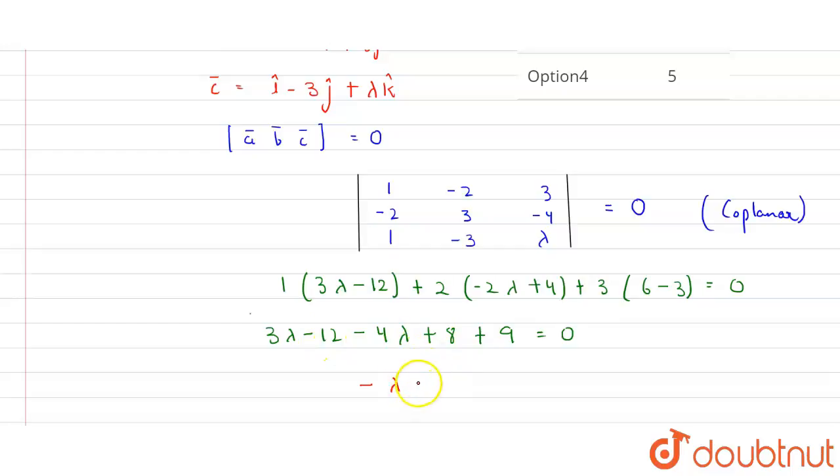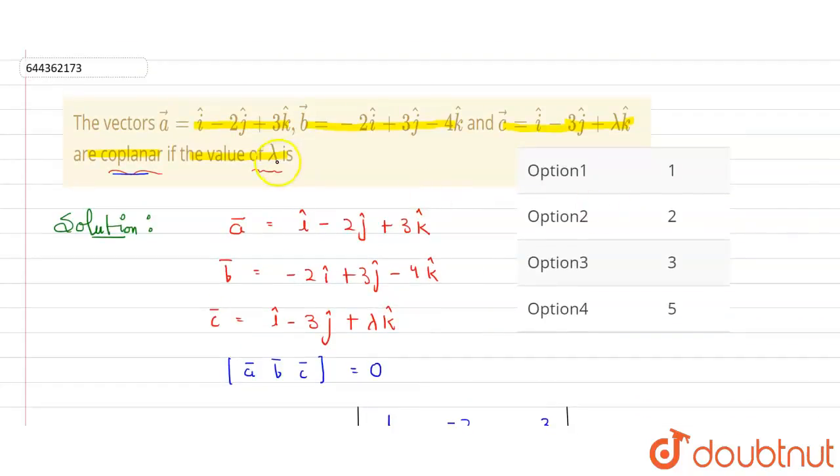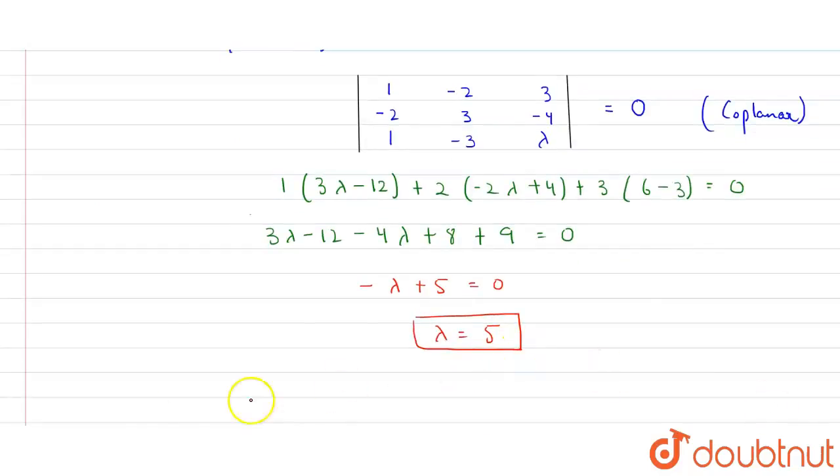So from here, it is visible that the value of lambda equals 5. And what we need to find: value of lambda. It is 5. Option 4 is the correct answer, matching with our answer. So this is the right answer, thank you.